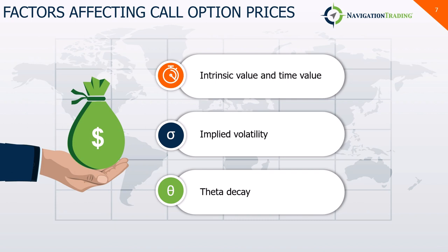Theta decay is important to understand. It is a measurement of an option's value erosion over time — in plain English, options lose value each day. Theta decay accelerates as expiration approaches, and you'll see that acceleration kick in somewhere between 30 to 45 days before expiration. The closer to expiration, the faster that erosion of time value occurs.